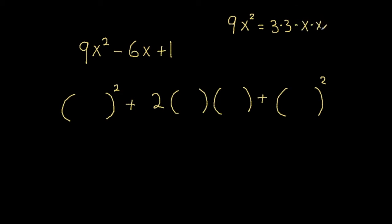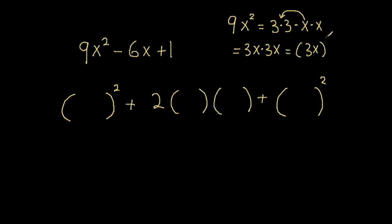Now does it look like we're multiplying something by itself? If I take one of those x's and put it in between one of those 3's — I can do that because the order in which you multiply doesn't matter — I get 3x times 3x. So now I know what I multiply by itself to get 9x squared: it's 3x. So 9x squared is equal to the quantity 3x, all squared. So let me write that down: 3x.